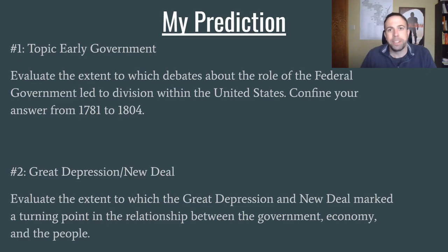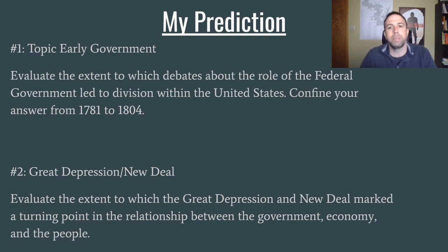Okay, if you're still here, here are my predictions. The first one — I think one of the DBQs is going to be about the early government. A possible prompt could be: evaluate the extent to which debates about the role of the federal government led to division within the United States, confined to 1781 to 1804. We haven't seen that topic on a DBQ in a very, very long time, and it's a really good topic.